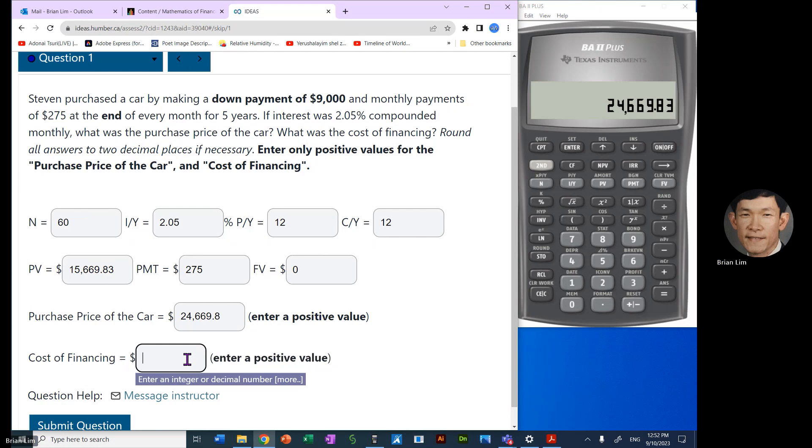Now what's the cost of financing? Well, the cost of financing is we will take the payments, multiply by the number of payments, and then subtract with the present value. We do not use this number because Steven didn't need to borrow this $9,000 that was paid at the beginning. So let us proceed to get the cost of financing. So how much did Steven pay? Well, each payment was $275, so we'll take that number.